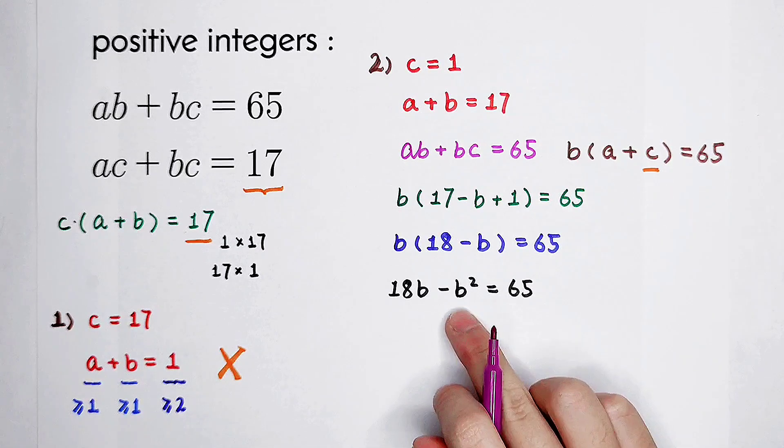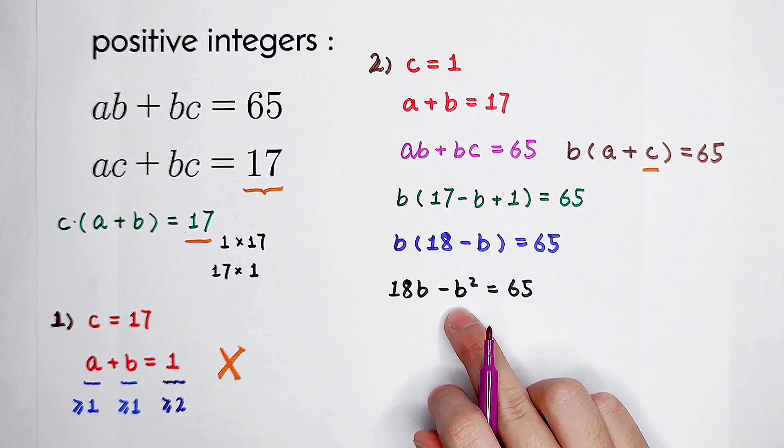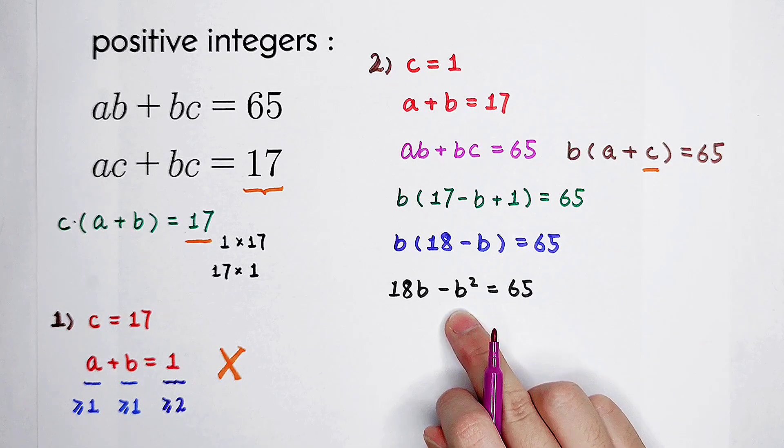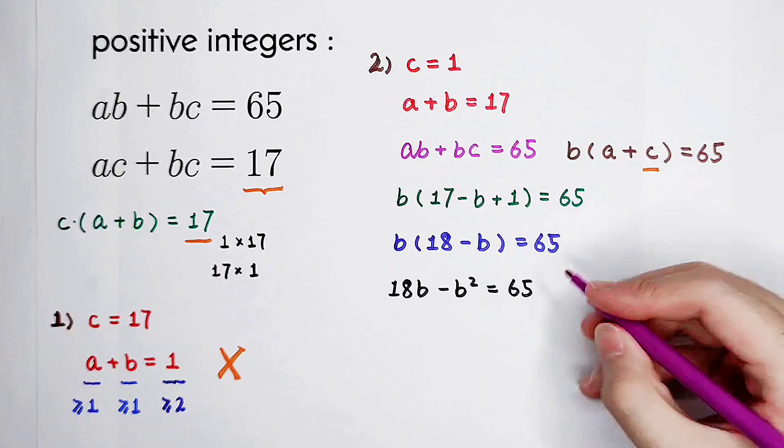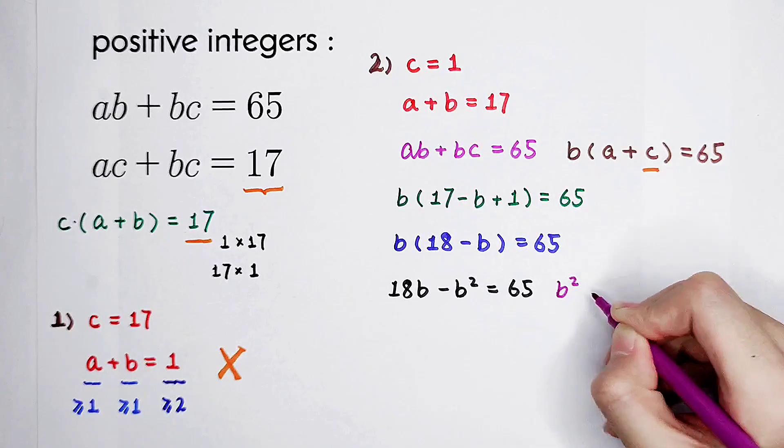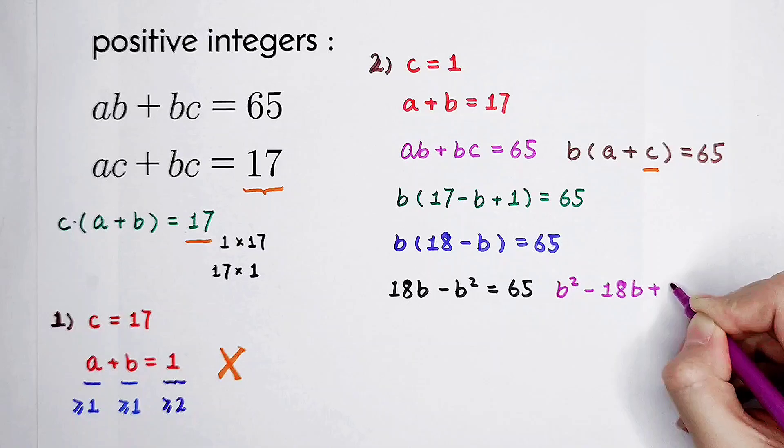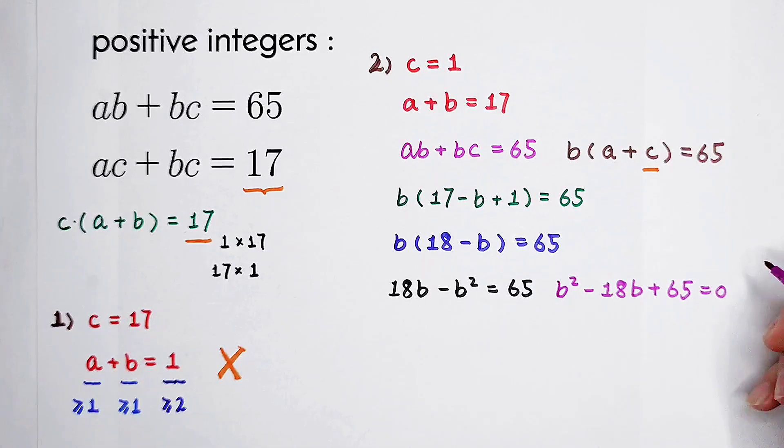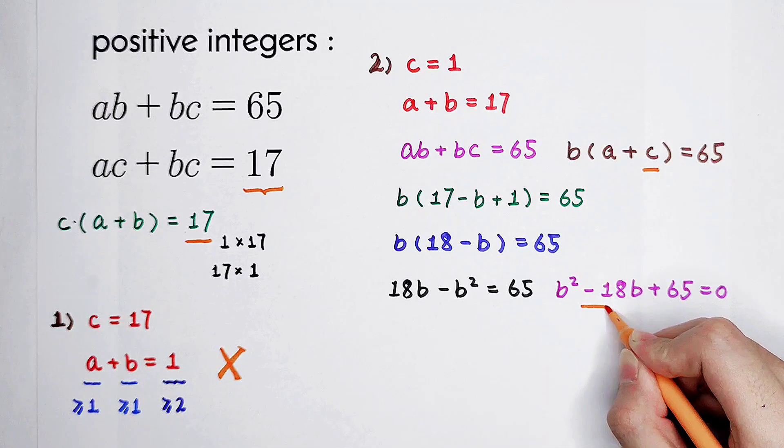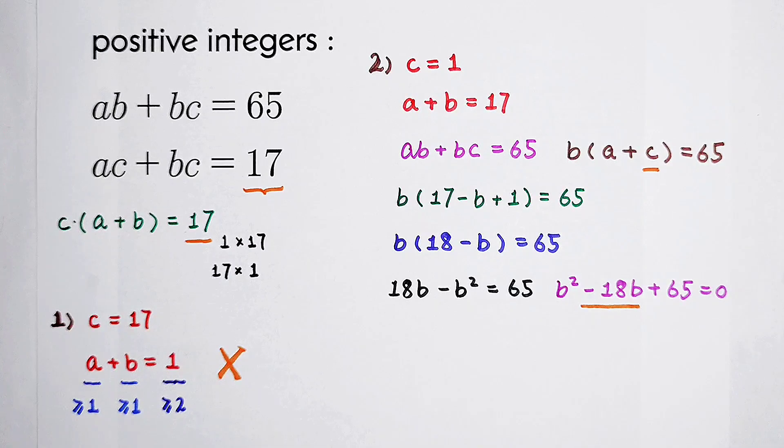Then 18b minus b squared minus 65 is equal to 0. And we can multiply by minus 1 on both-hand side, and b squared minus 18b plus 65 will be 0. Now, how to solve this equation? Very easy. By factorizing.